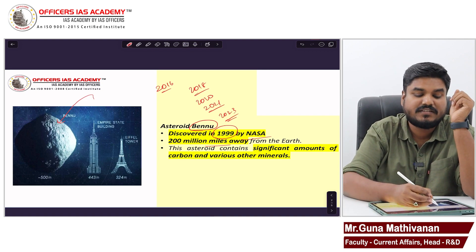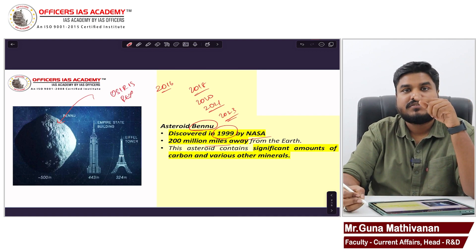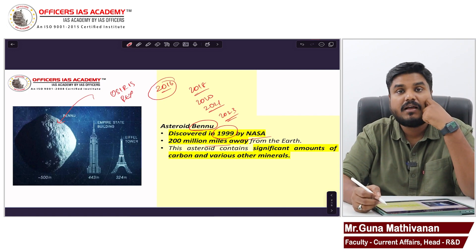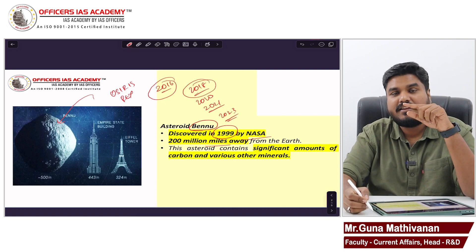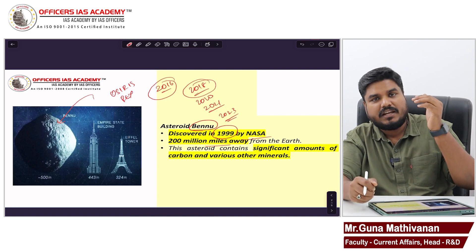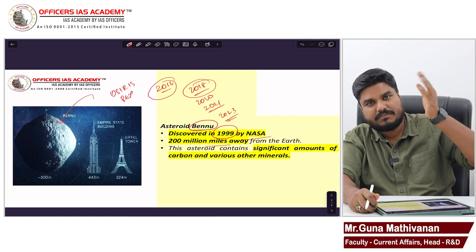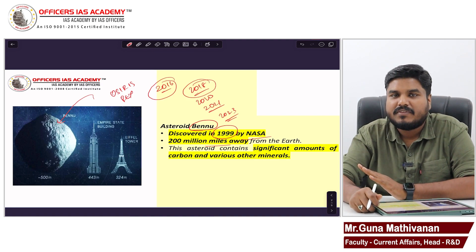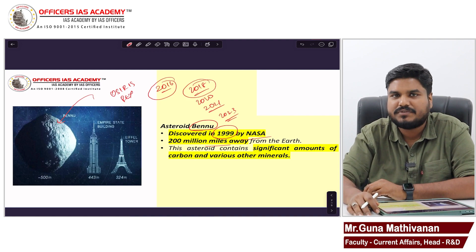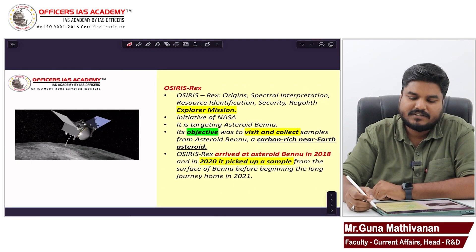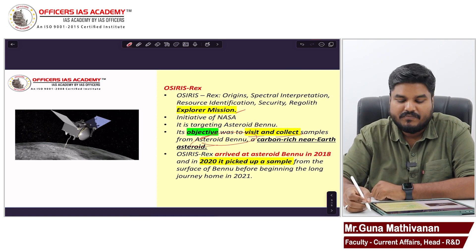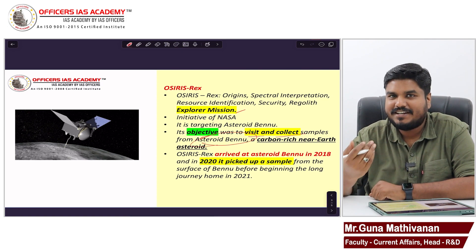That space mission is called OSIRIS-REx. It was sent to Asteroid Bennu in 2016, landed in 2018, collected samples in 2020, and the spacecraft started the journey back in 2021. Recently, the OSIRIS-REx spacecraft sent the samples back to Earth. So OSIRIS-REx is a space exploration mission whose objective is to visit and collect samples from Asteroid Bennu.